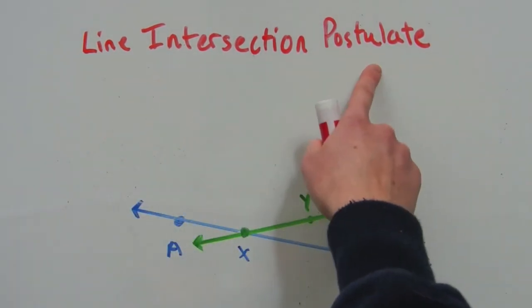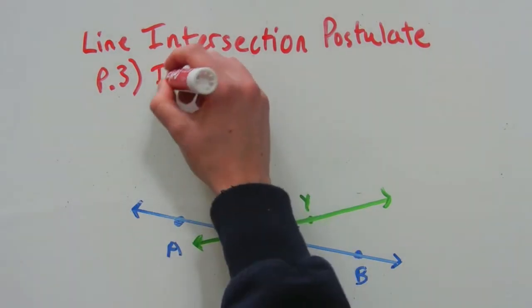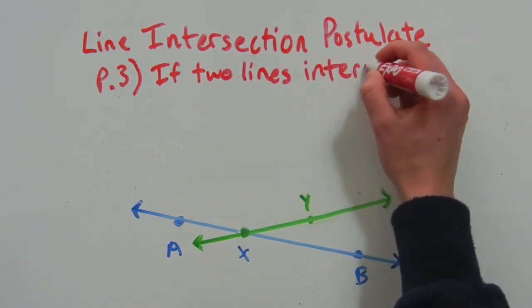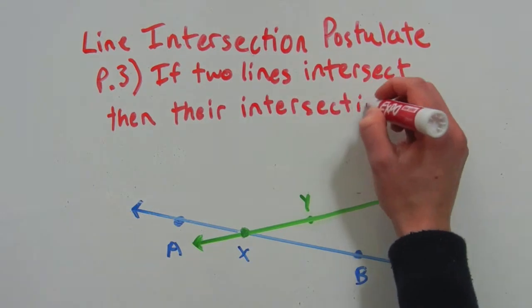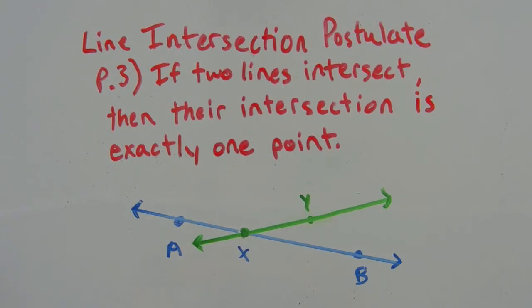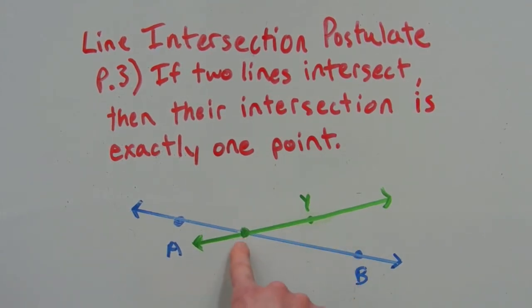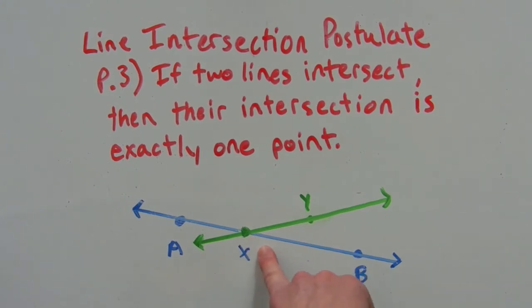The line intersection postulate. So this is the third one we're going over, P3. And P3 says that if two lines intersect, then their intersection is exactly one point, which we can see on the picture below. Line XY intersected line AB, and they intersected at point X. There is no other place where these lines will intersect. There is only one intersection between the two, and this is at point X.